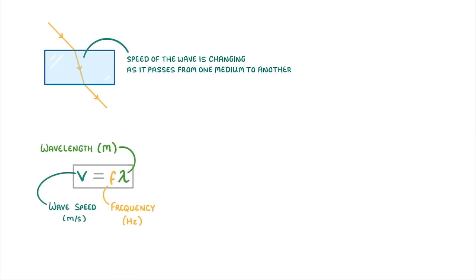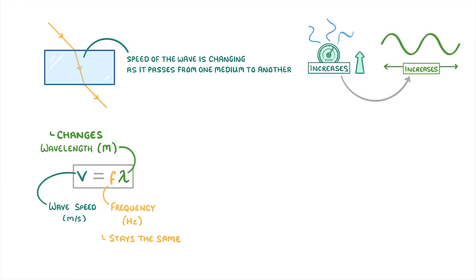The last thing I want to mention is that because the speed of the wave is changing as it passes from one medium to another, then by our wave speed equation, which says that wave speed equals frequency times wavelength, the frequency or the wavelength must be changing as well. And you need to remember that the frequency always stays the same. It's only the wavelength that changes. So if the speed of a wave increases, the wavelength must increase as well, and vice versa.